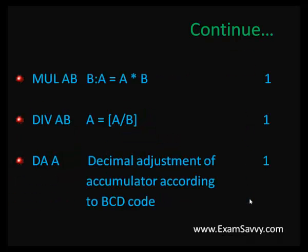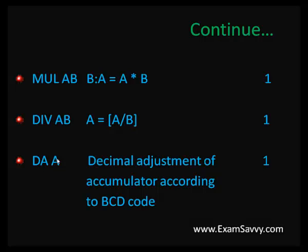For multiplication, we perform the operation with two registers. The result is stored in accumulator (A) and B register — the lower bits are stored in A and the MSB is stored in B. For division, the quotient is stored in A and the remainder is stored in B. DAA (Decimal Adjust for Accumulator) is used for BCD code conversions. The size for all these is 1-byte.